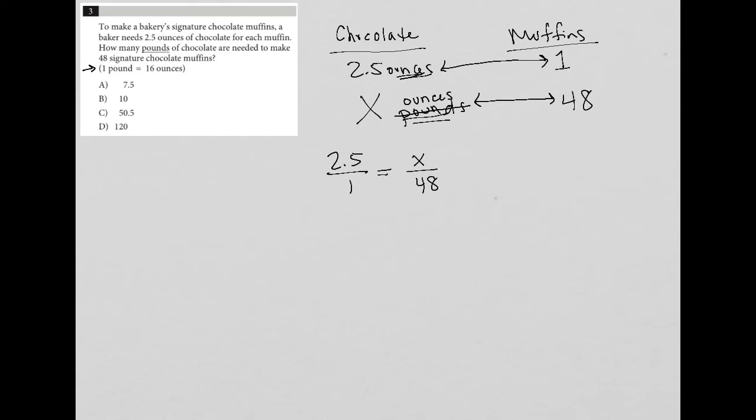With this proportion, I can cross-multiply. So X times 1, well, that's just X. 2.5 times 48, when I put that into my calculator, what I get there is that that's equal to 120.